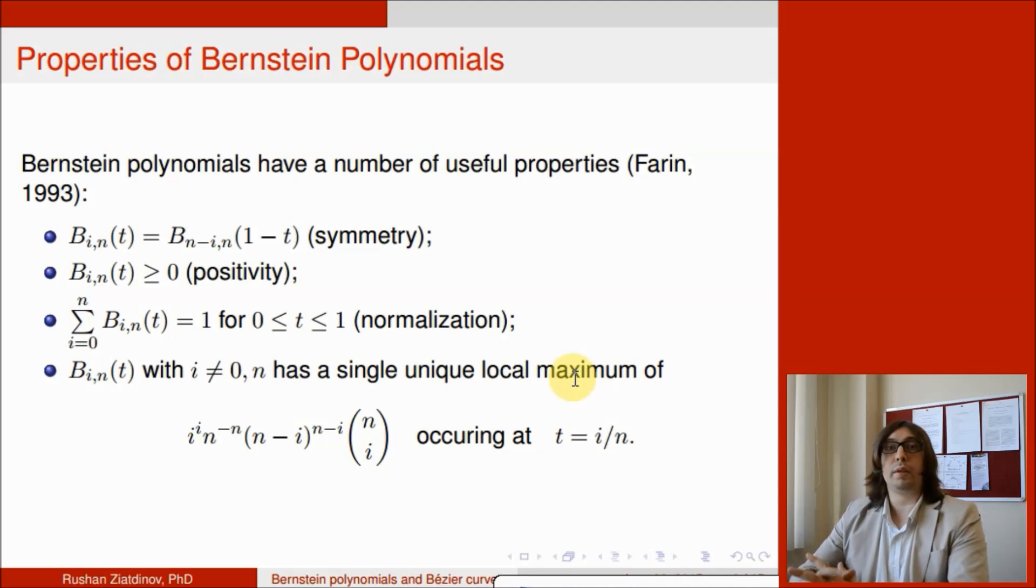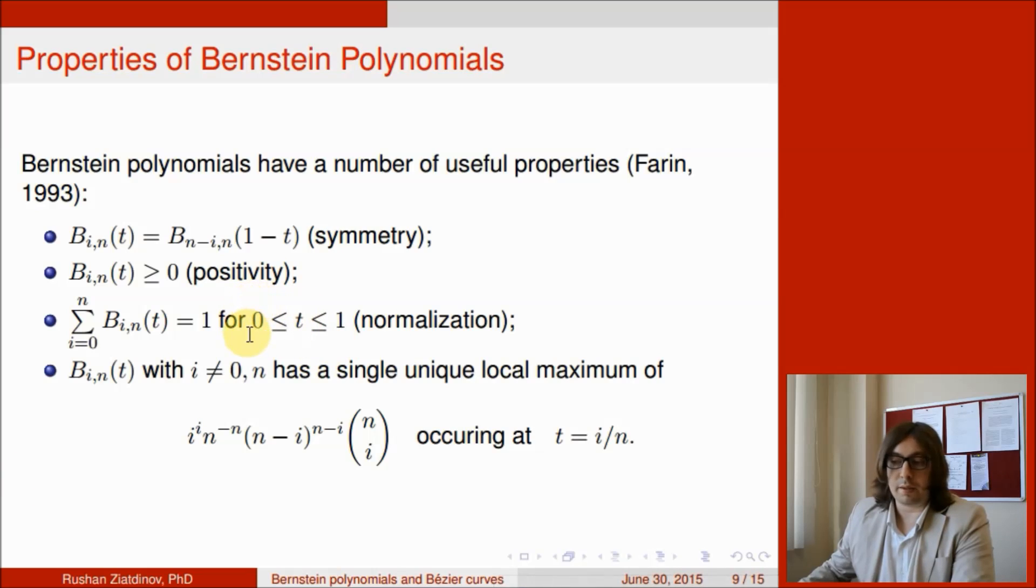Here we have important and interesting properties for Bernstein polynomials. They were discussed briefly in the book of Therian published in 1993. The first property is symmetric: b_i,n of t equals b_n-i,n of 1 minus t. The next property is positivity: all the polynomials b_i,n are greater or equal to 0. The next property is normalization: the sum of all Bernstein polynomials for i equal 0 to n equals 1 for t from 0 to 1.